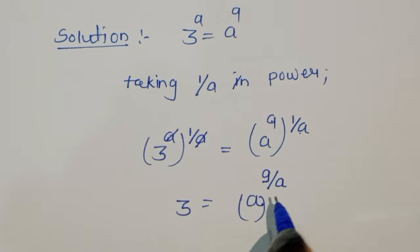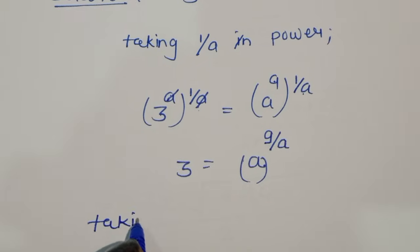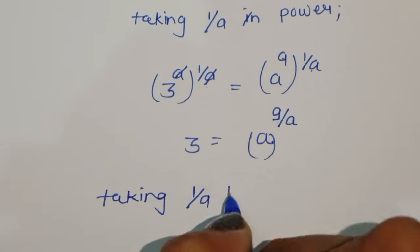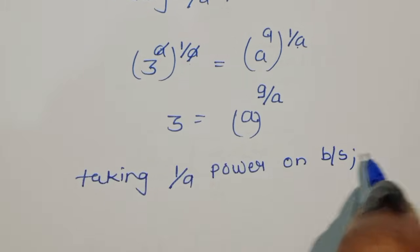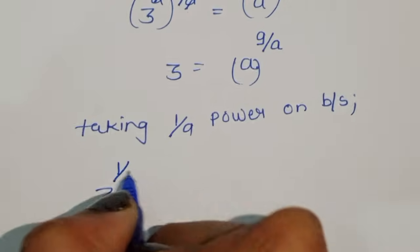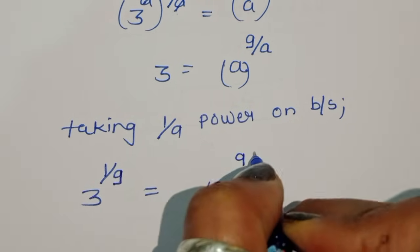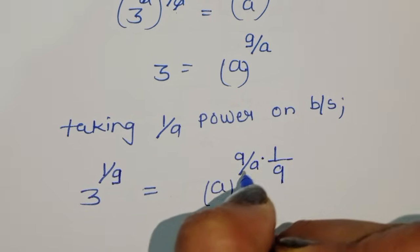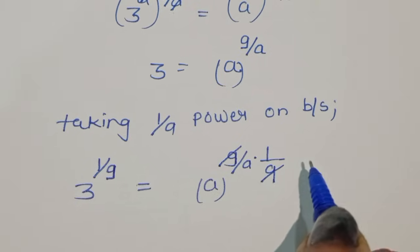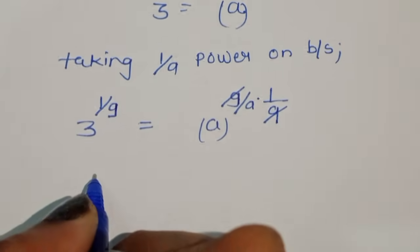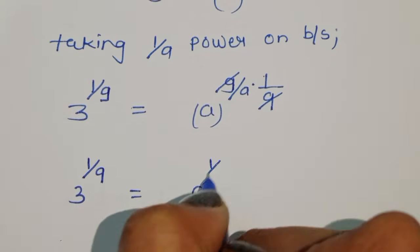Now we have to cancel this 9, so we can take 1 upon 9 power on both sides. So 3 power 1 upon a is equal to a power (9 upon a times 1 upon 9). This 9 is cancelled, so we can write 3 power 1 upon 9 is equal to a power 1 upon a.